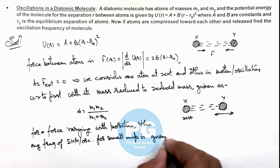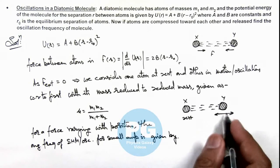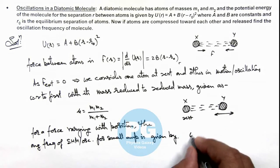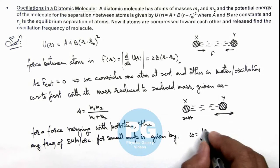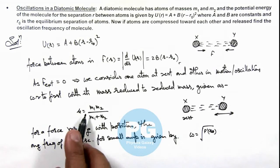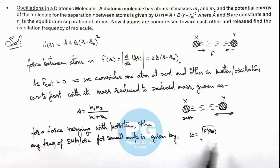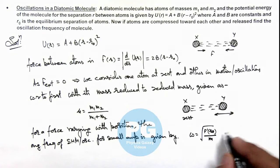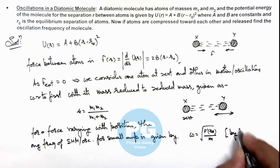Is given by, for a body which is oscillating under this, this is given by root of F'(r₀), that is first derivative of force at the position of equilibrium divided by m, which is given by Taylor's method.